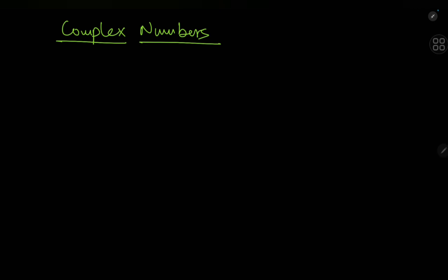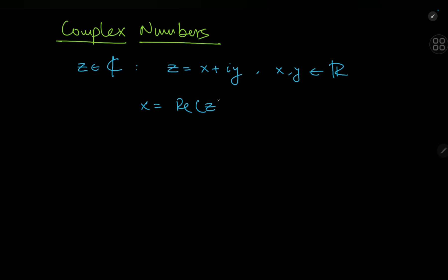Starting off with the notion of what exactly is a complex number. The set of complex numbers, denoted by the symbol ℂ, contains any number z that can be represented as z = x + iy, where x and y are both real numbers. Here x is called the real part of z, y is called the imaginary part of z, and i is called the imaginary unit.